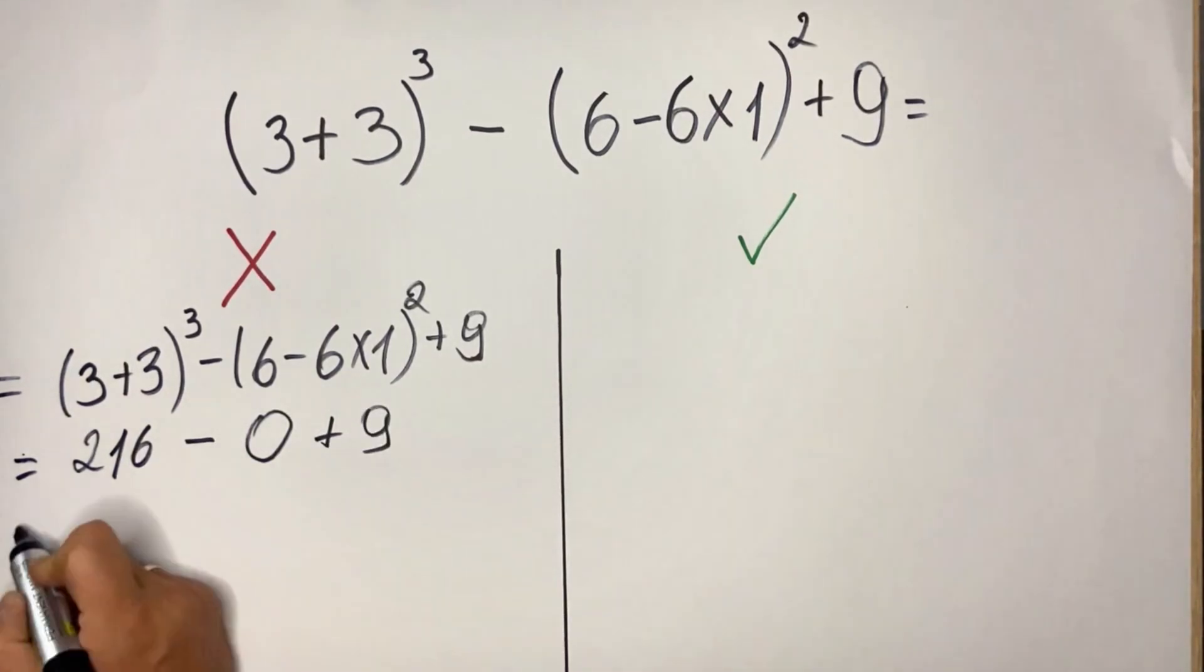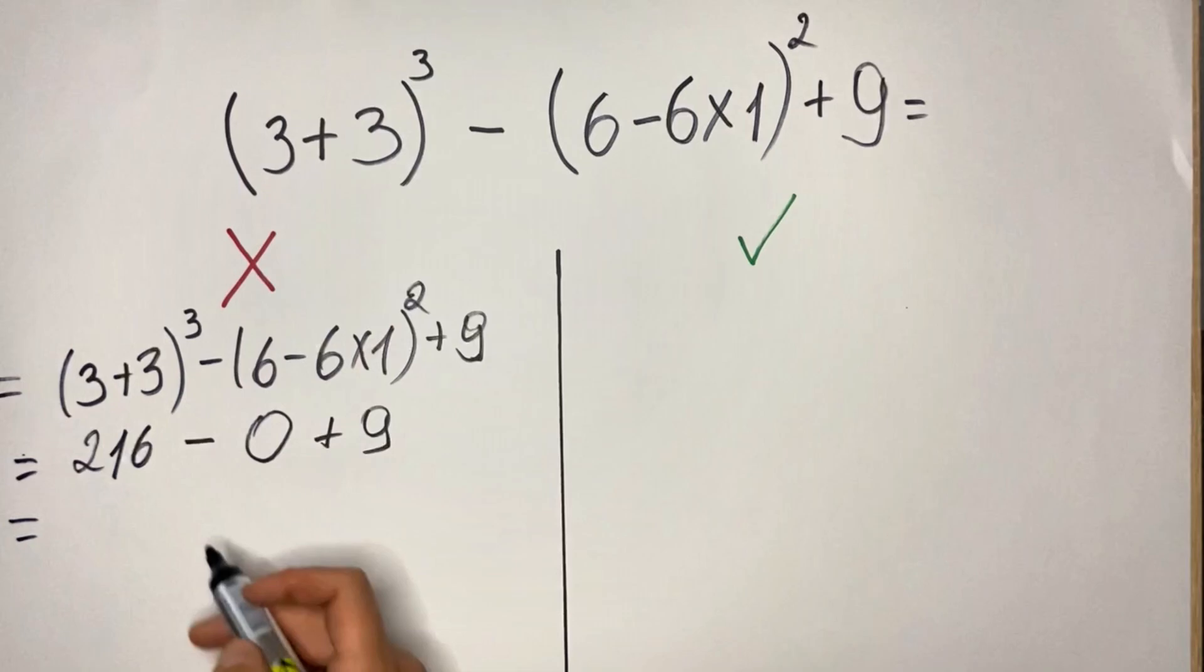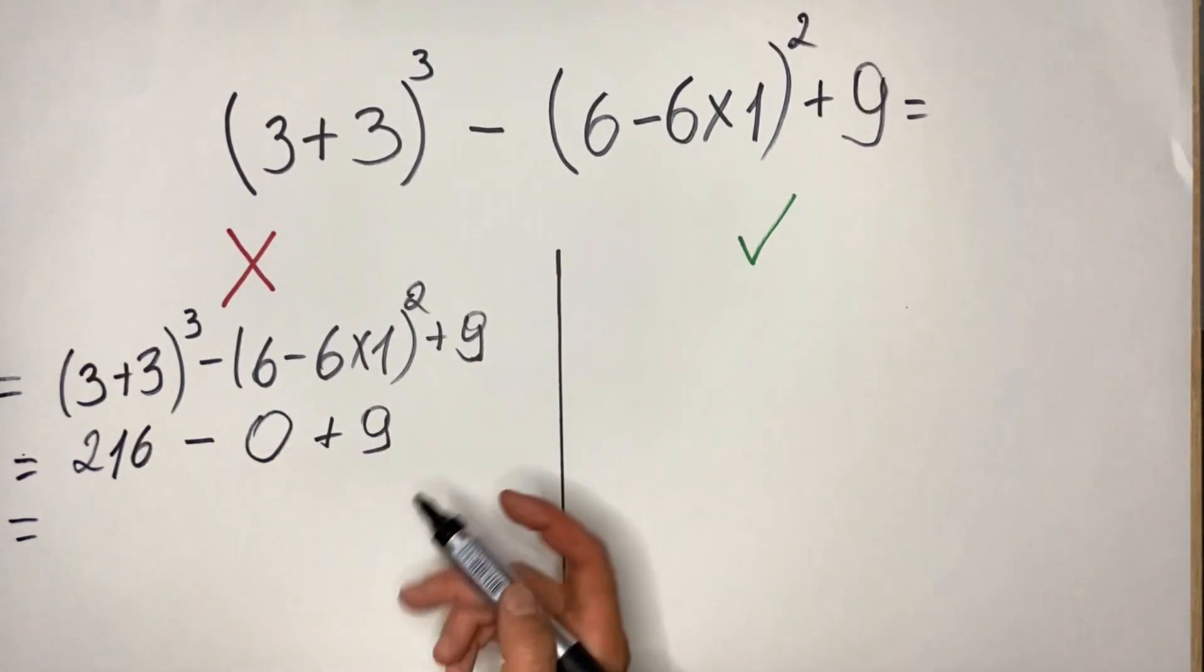Plus 9. Plus 9. Then of course what we get here is 225.